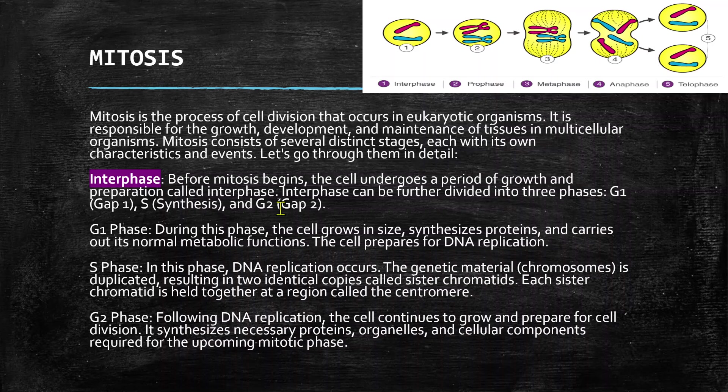In G1 phase, the cell grows in size, synthesizes proteins, and carries out its normal metabolic functions. The cell prepares for DNA replication. In S phase, DNA replication occurs — the genetic material, chromosomes, is duplicated, resulting in two identical copies called sister chromatids.